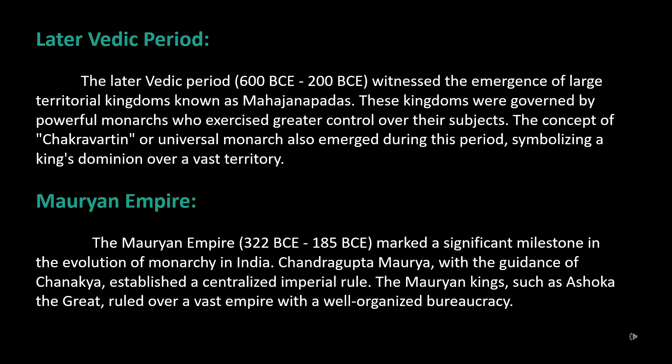The Later Vedic Period (600 BCE–200 BCE) witnessed the emergence of large territorial kingdoms known as Mahajanapadas. These kingdoms were governed by powerful monarchs who exercised greater control over their subjects. The concept of Chakravartin, or Universal Monarch, also emerged during this period, symbolizing a king's dominion over a vast territory.